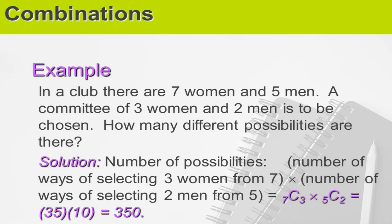Next: in a club, there are seven women and five men. A committee of three women and two men is to be chosen. How many different possibilities are there? Out of seven women, we need to select three. Out of five men, we need to select two. Using combination, we compute C(7,3) multiplied by C(5,2).